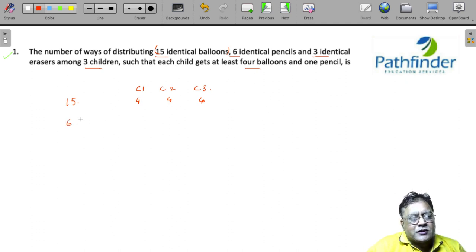Similarly, there are 6 pencils and each child gets at least one pencil. So 1, 1, 1. And there are 3 identical erasers which have to be distributed.